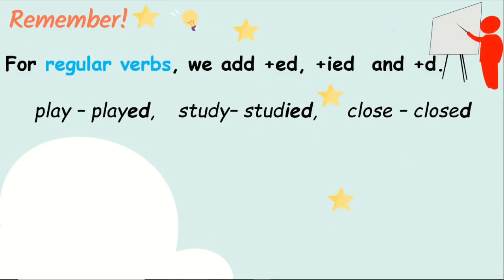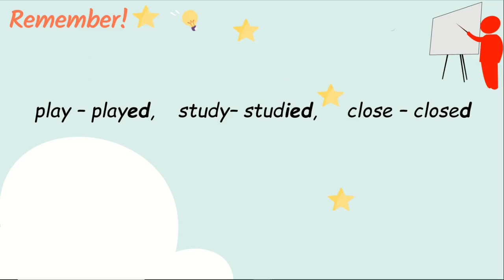You already know that regular verbs can be changed from the present tense to the past tense by adding -ed, as in 'played'; -ied, as in 'studied'; or only -d, as in 'closed'. But like many parts of English grammar, there are sometimes exceptions to the rules.